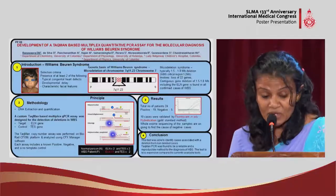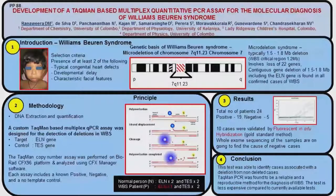Coming to the methodology, first the DNA is extracted and quantified, and then the TaqMan assay is set up. A sequence-specific fluorescently labeled oligonucleotide probe — the TaqMan probe — plus its primers go into this PCR.